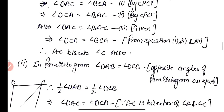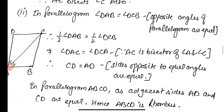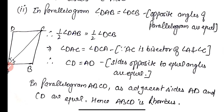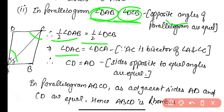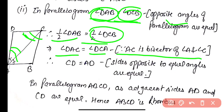Now we need to prove that ABCD is a rhombus. In the parallelogram, angle DAB and angle DCB are equal as opposite angles of a parallelogram are equal. So half of angle DAB equals half of angle DCB. Half of angle DAB is angle DAC and half of angle DCB is angle DCA.